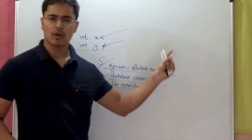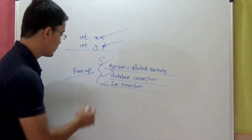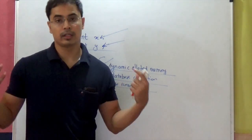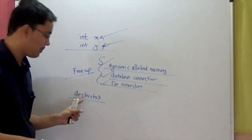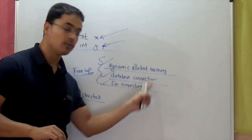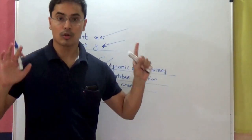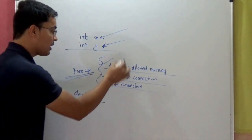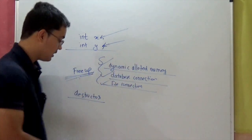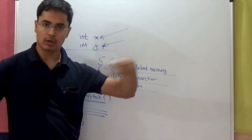Generally, when your object goes out of scope, the system automatically calls the destructor. C++ provides you with a default destructor, but it has no code, so nothing will happen. It is your programmer's responsibility that when your object goes out of scope, you must free up these resources. And you write that code of freeing up resources in your destructor.